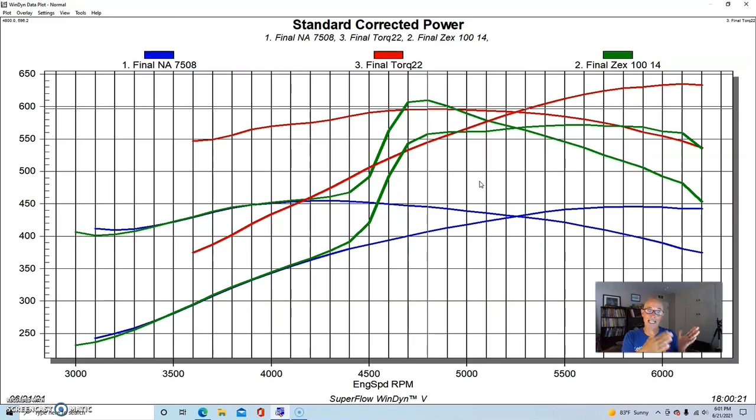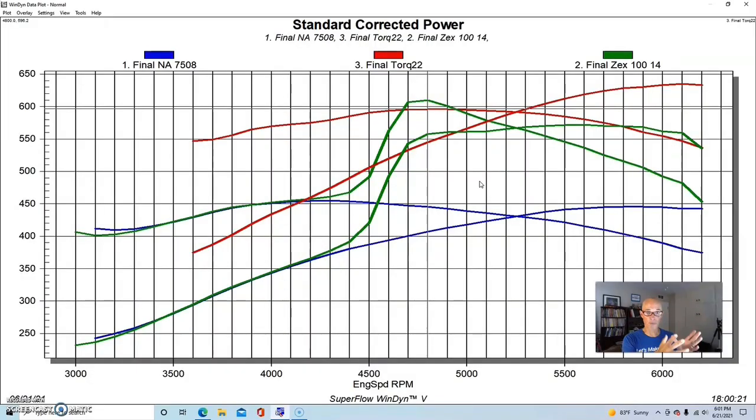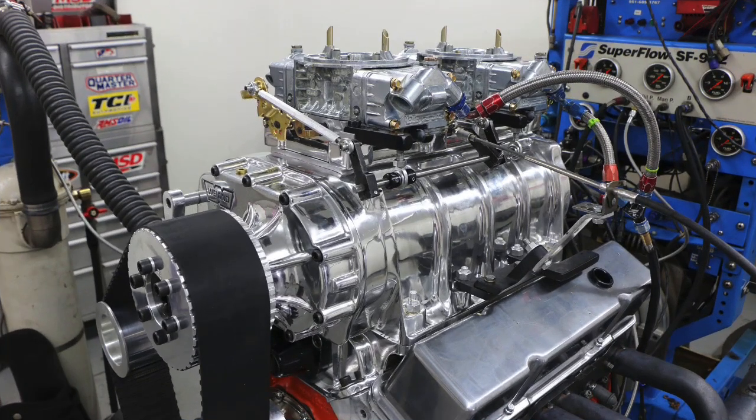As I said, you could activate the nitrous lower as well. So both of these power adders actually add quite a bit of power. Now let's take a look and see what happened on this same combination when we ran a 671 roots blower, and then we can compare the centrifugal to the roots.